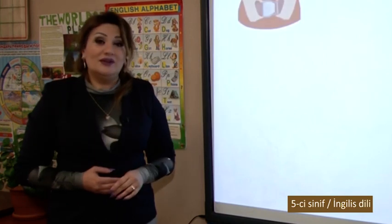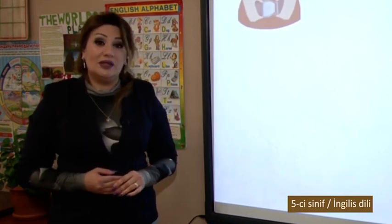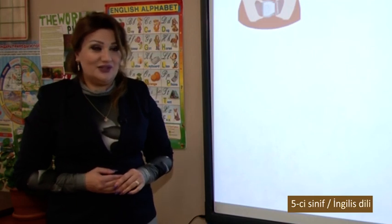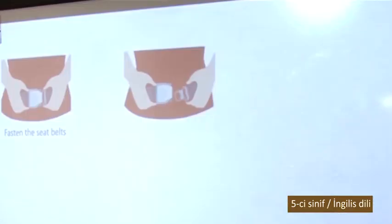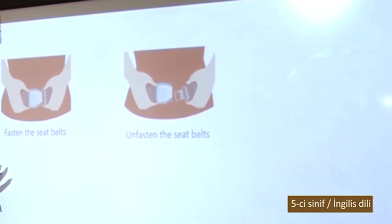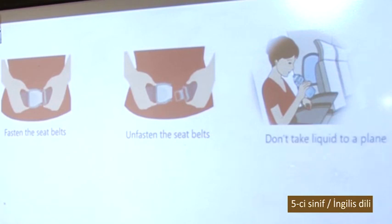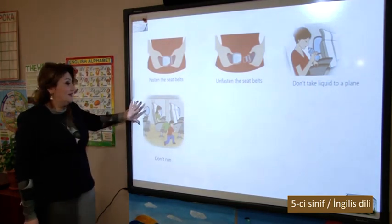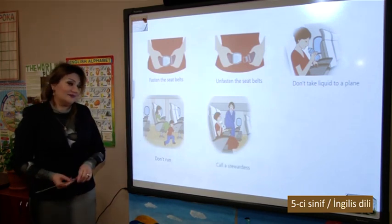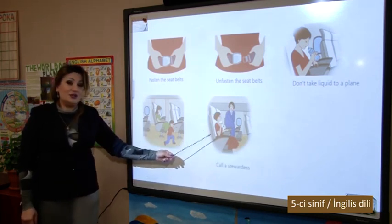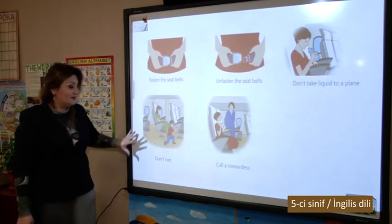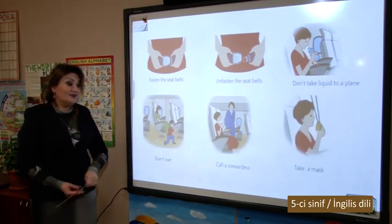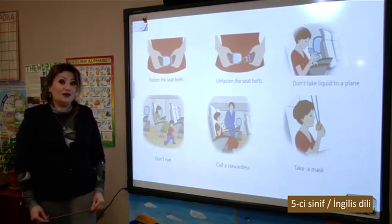Let's get acquainted with the rules of what we can do on a plane during the flight. Fasten the seatbelts. Unfasten the seatbelts. Don't take liquid onto a plane — as you see from the picture. Don't run on the plane. Call a stewardess. Take or wear a mask.